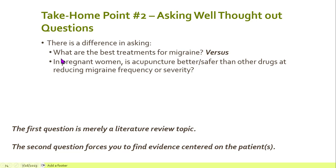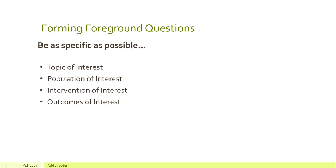Asking well-thought-out questions can be challenging. Compare these two migraine questions: 'What are the best treatments for migraine?' versus 'In pregnant women, is acupuncture better or safer than other drugs at reducing migraine frequency or severity?' The second question is much better — it's very focused and will give you far more targeted search results. The first is vague and will return too much information. Getting good background information is important, but applying it to the foreground — the patient's specifics and preferences — is also important.